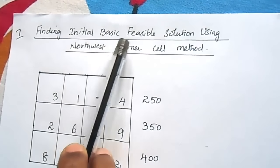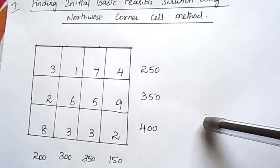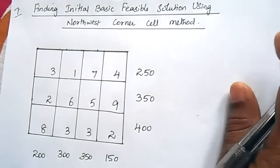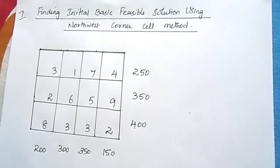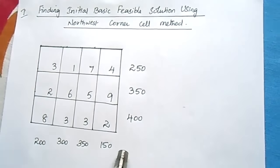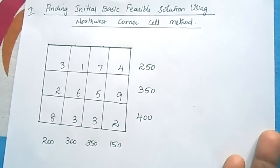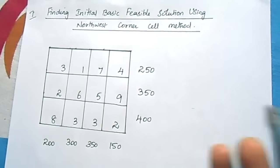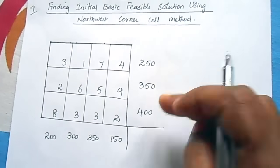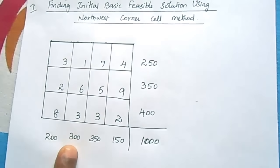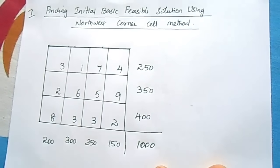The first step is finding the initial basic feasible solution using the Northwest corner cell method. Before solving, you need to check whether it is a balanced or unbalanced transportation problem by checking total demand and total supply. Total supply: 250+350+400=1000. Total demand: 200+300+350+150=1000. It is a balanced transportation problem, so no dummy row or column is needed.